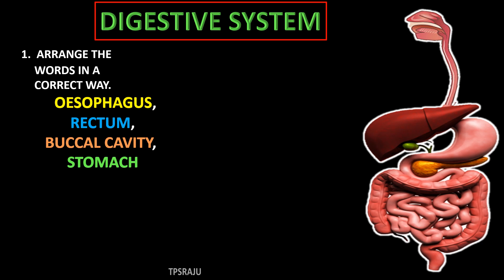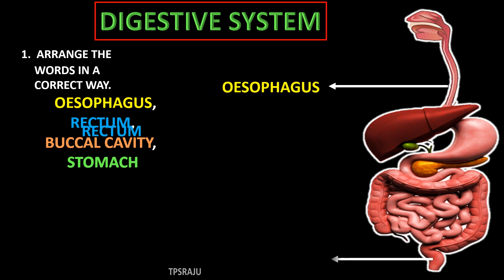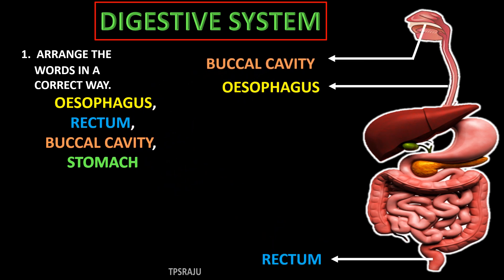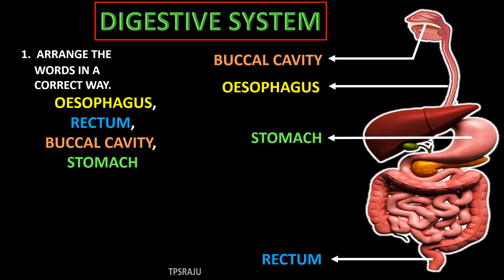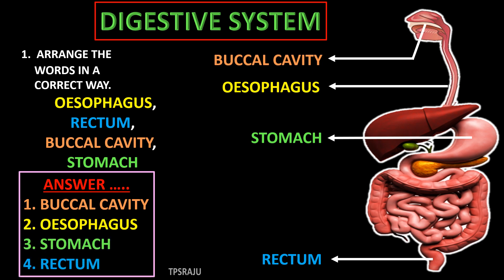Now, we are going to answer the first question. There are 4 words: Esophagus, Rectum, Buccal cavity and Stomach. These are not in correct order. Observe here. This is the correct order. So, the answer is Buccal cavity, Esophagus, Stomach and Rectum. Likewise, we can answer this type of question easily.